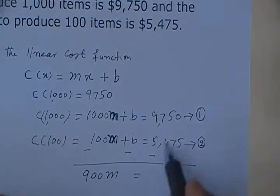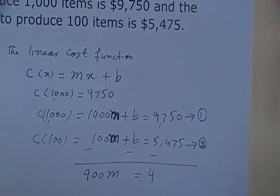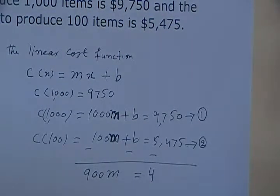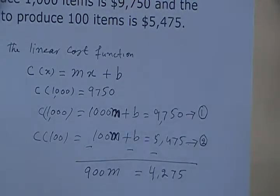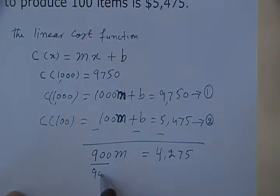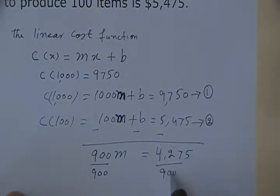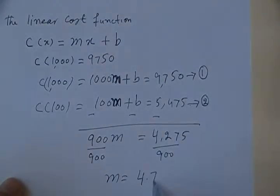That's equal to 9750 minus 5,475, which gives me 4,275. Dividing both sides by 900, m equals 4.75.